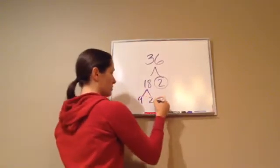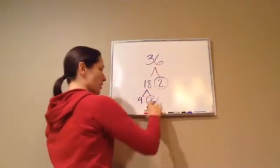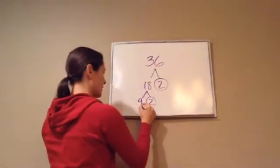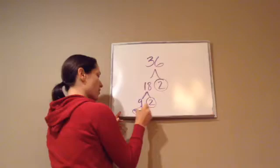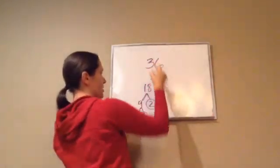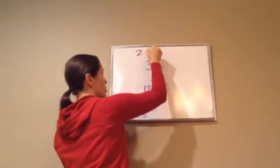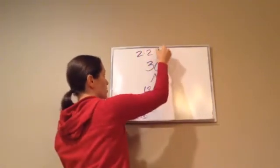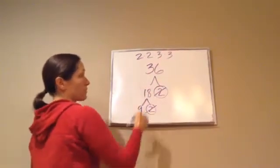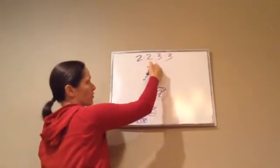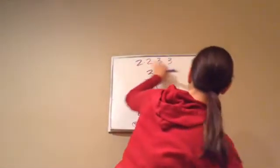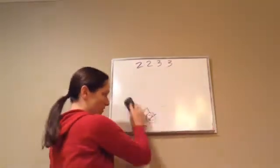Okay, and then so then we keep breaking it down. Nine times two. Two is a prime factor. Okay, I'm going to look at this. And then three and three is for nine. Three and three. And both of those are prime factors. So the prime factors that make up 36 are two times two times three times three.